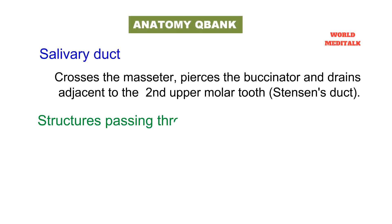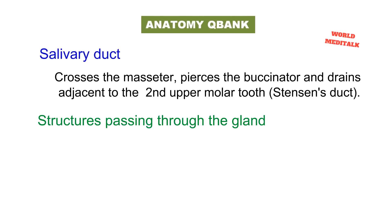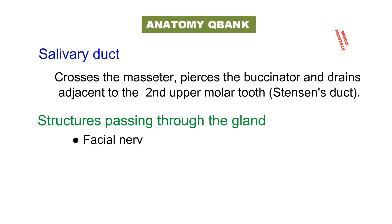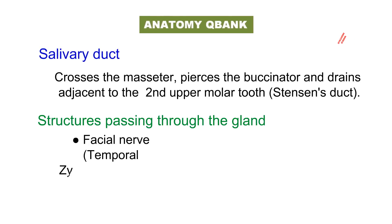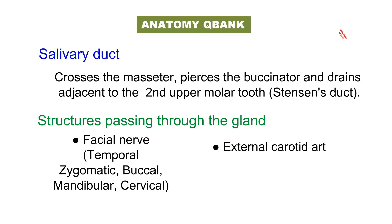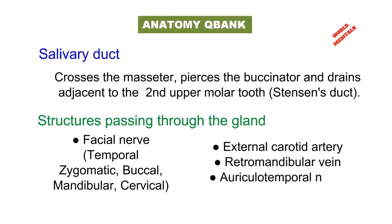Structures passing through the parotid gland — important for MCQ exams: the facial nerve, with branches including zygomatic, buccal, mandibular, and cervical; the external carotid artery; the retromandibular vein; and the auriculotemporal nerve. A separate video will cover its relations in detail.